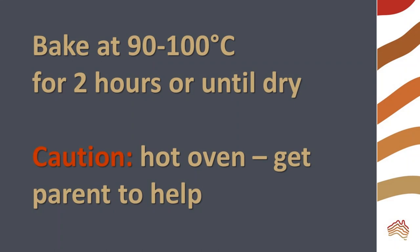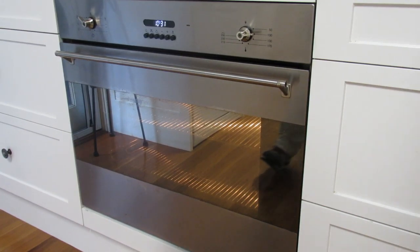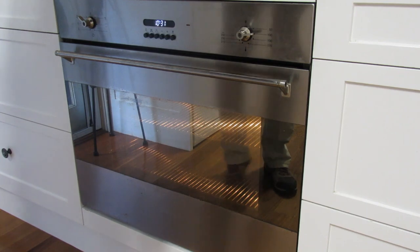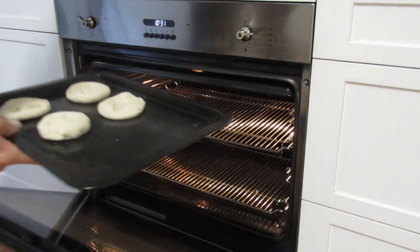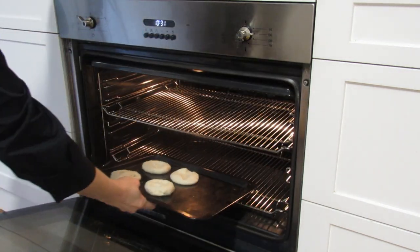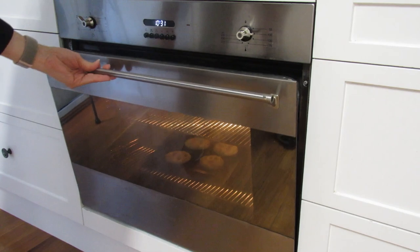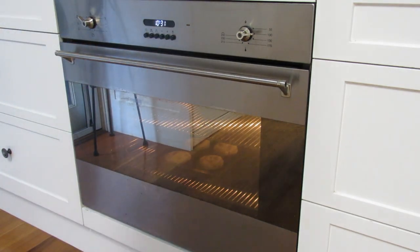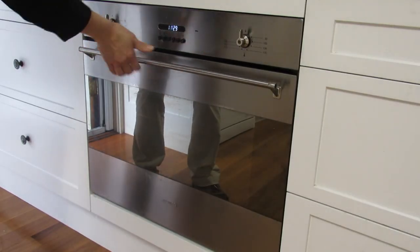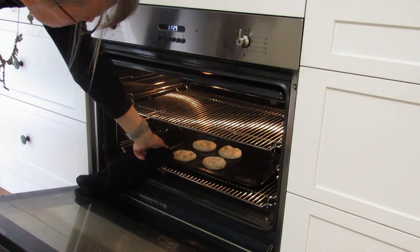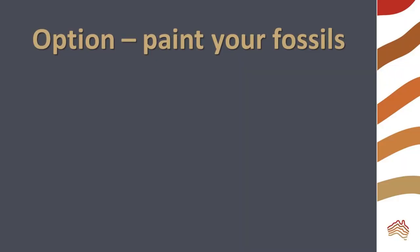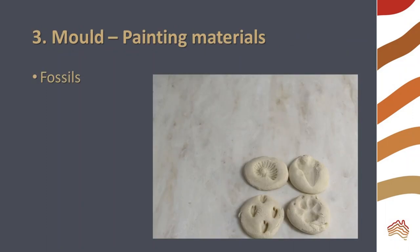Bake the fossils at 90 to 100 degrees for about two hours or until they're dry. Ask an adult for help with the hot oven. You can also let the fossils dry in a warm place if you prefer not to bake them. Remove the fossils from the oven and allow them to cool before handling them. You may wish to paint your fossils — this makes it easier to see details.